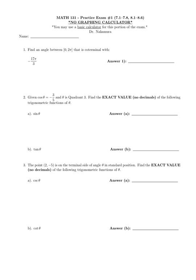Number one: find an angle between 0 to 2π that is co-terminal with −17π/3. If you are still uncomfortable dealing with radian measure, convert this into a degree measure. 17 times π/3 is 60 degrees, so that's 1020. If you want to know how many times you're going to have to revolve around the circle, start subtracting 360 from it. That gives 660, then 300. So we're going around the circle two revolutions plus 300 degrees.